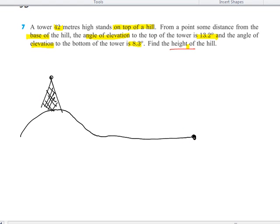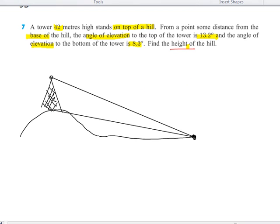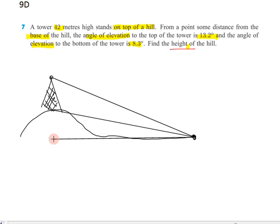From this point, there's an angle of elevation to the top of the tower and an angle of elevation to the base of the tower. For an angle of elevation, we ought to have a horizontal, and that'll go all the way to the base of the hill. And from that base, we can go straight up to the top of the hill.